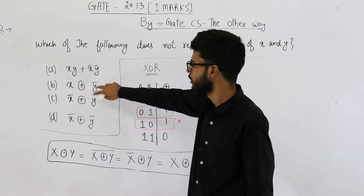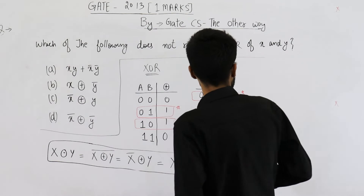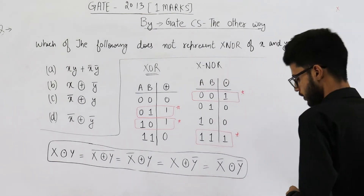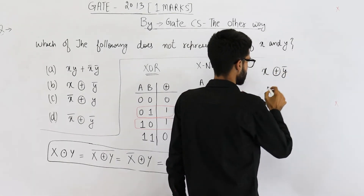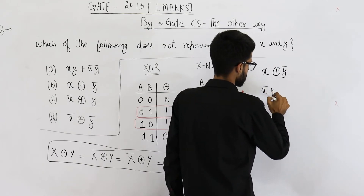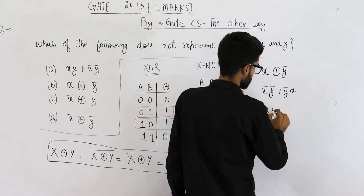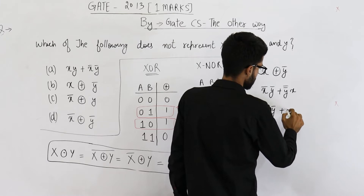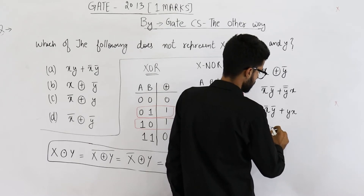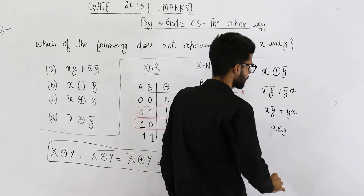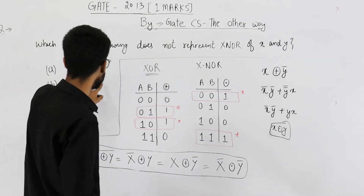Option A — there's no doubt about it, it's the formula for X-NOR. Let's analyze B and C. Option B is X X-OR Y complement. Expanding it, we get X̄Ȳ plus Y double complement X, which is X̄Ȳ + XY, which is X-NOR of X and Y. So option B represents X-NOR and cannot be the answer.